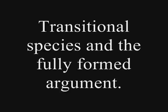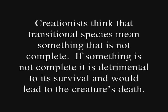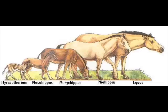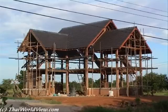This video is going to be about transitional species and the argument that transitional species don't exist because everything we see in the fossil record is fully formed. This argument was hard for me to understand because I know that every living thing is a transitional species. I didn't understand this argument until MI2Heavy4You left me a message saying that a transitional species should look like a house half ways built.